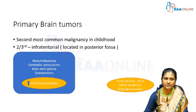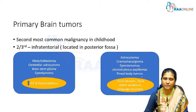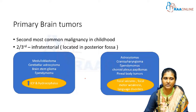One-third are supratentorial, and those supratentorial tumours include astrocytomas, craniopharyngioma, ependymoma, choroid plexus papillomas, and pineal body tumours. Children with supratentorial tumours typically present with focal seizures, focal motor weakness, and language disorders. So infratentorial tumours present with raised ICP features, while supratentorial tumours present mainly with seizures and weakness — this is the key differentiating feature.